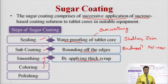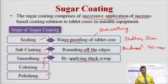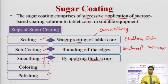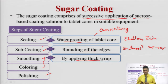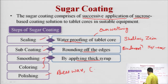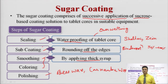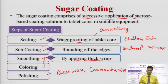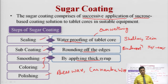After the coloring step the next step is polishing. After coloring, the tablets look very non-glossy. For polishing we use various waxes like beeswax and carnauba wax. By using these waxes, polishing of the tablet surface is done to give them shine and a glossy appearance. This is the final step — is tarah se aapki sugar coating complete hoti hai.